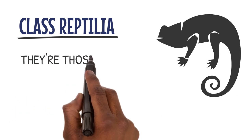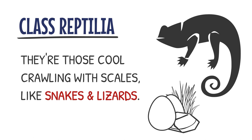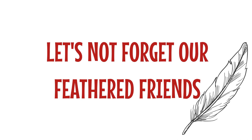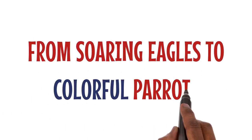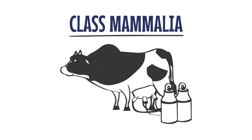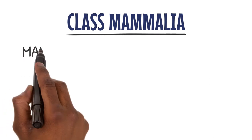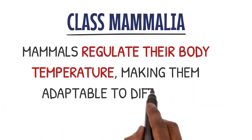Within the subphylum Vertebrata, we have some remarkable classes. Take class Reptilia, for example — those cool crawling creatures with scales, like snakes and lizards. They lay eggs on land. And let's not forget our feathered friends, class Aves. Birds are incredible creatures with wings that allow them to fly gracefully through the sky. From soaring eagles to colorful parrots, they never fail to amaze us. Lastly, we have class Mammalia, to which we humans belong. Mammals have unique features like mammary glands that produce milk, and most importantly, we are warm-blooded. Mammals regulate their body temperature, making them adaptable to different environments.